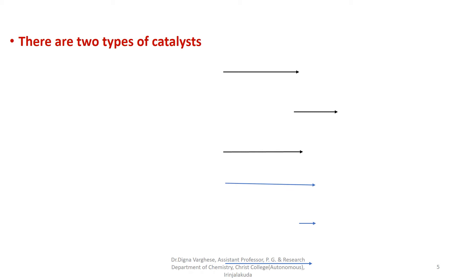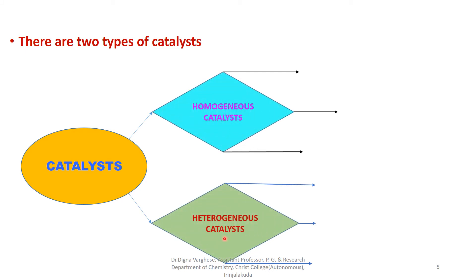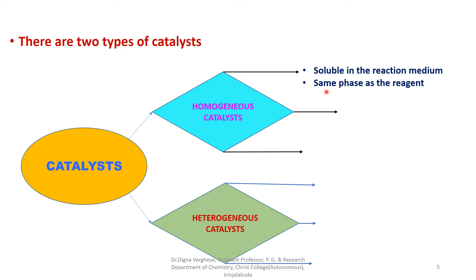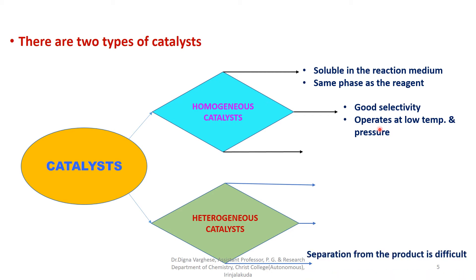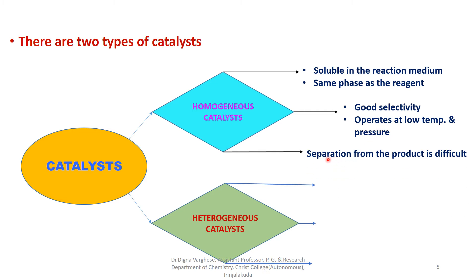Catalysts are classified into two types: homogeneous catalysts and heterogeneous catalysts. Homogeneous catalysts means the catalyst is soluble in the reaction medium — both the catalyst and the reactants are in the same phase. Homogeneous catalysts show good selectivity and operate at low temperature and pressure. However, one disadvantage is that separation from the product is very difficult.